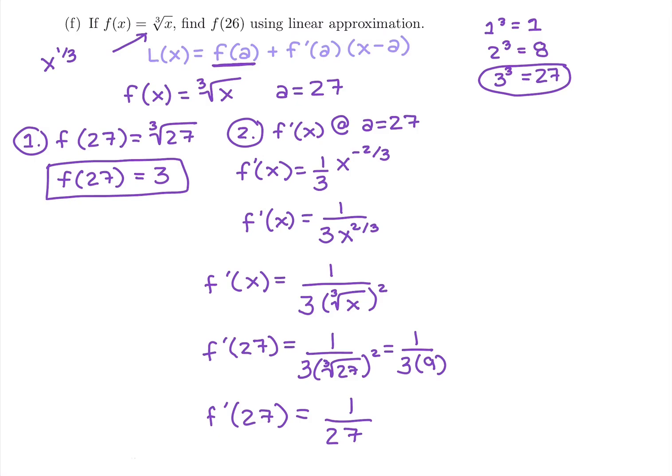We have to do some algebra for this one. It's a little bit nicer when it's a trig function where we could just think about the unit circle. But we can take the third root of 27 to be 3, square it to get 9, and so 1/3 with that 9 in the denominator gives us 1 over 27.